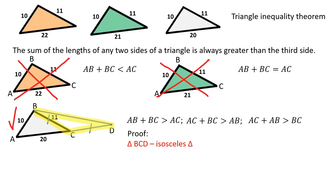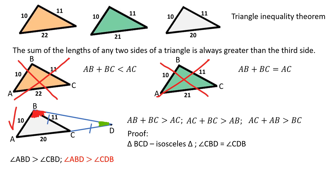Triangle BCD is an isosceles triangle. Therefore, angle CBD is part of angle ABD. Angle ABD is greater than angle CBD, and therefore angle ABD is greater than angle CDB.